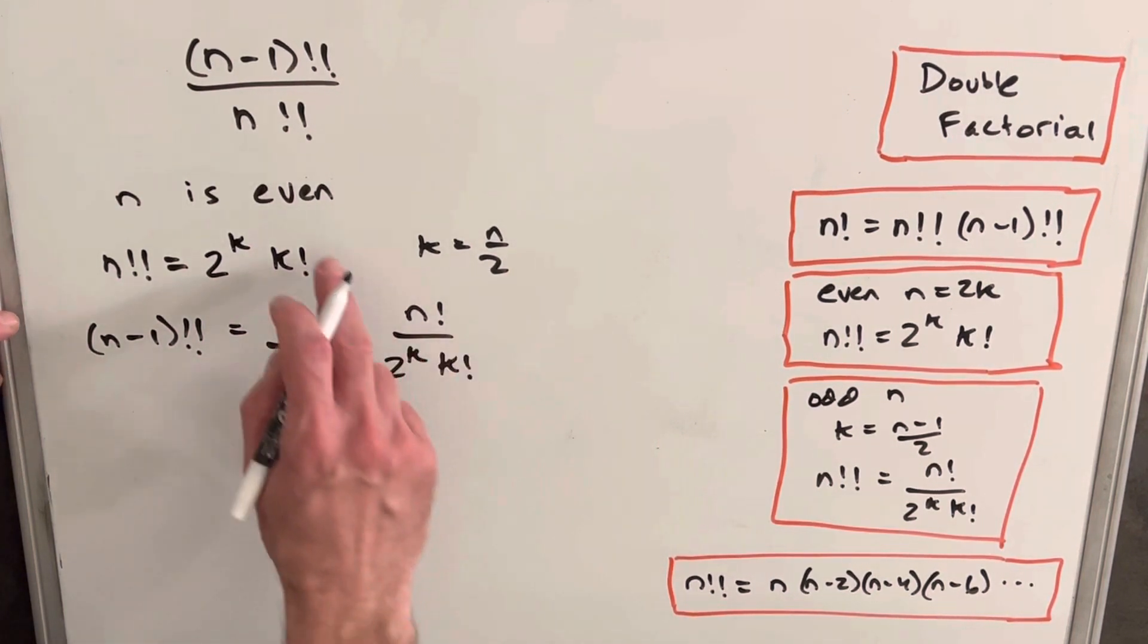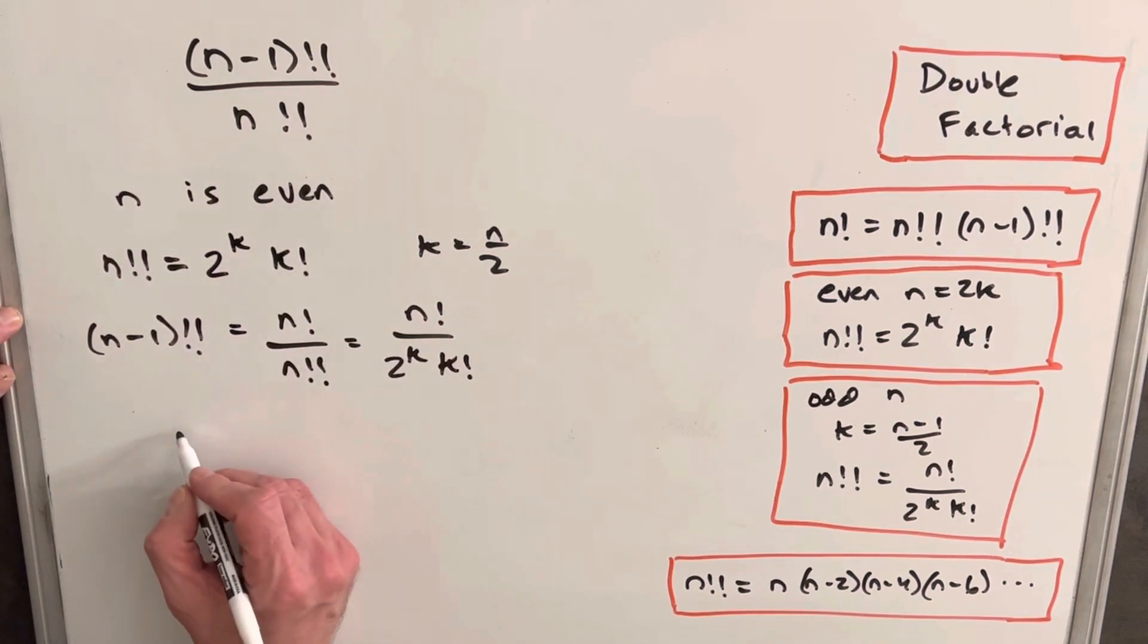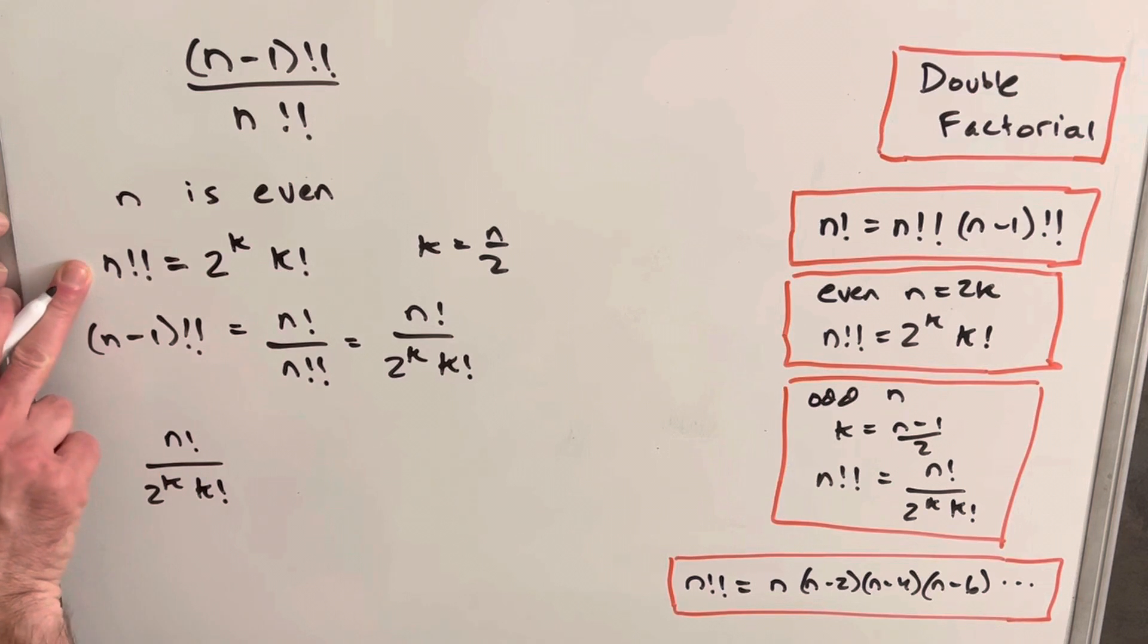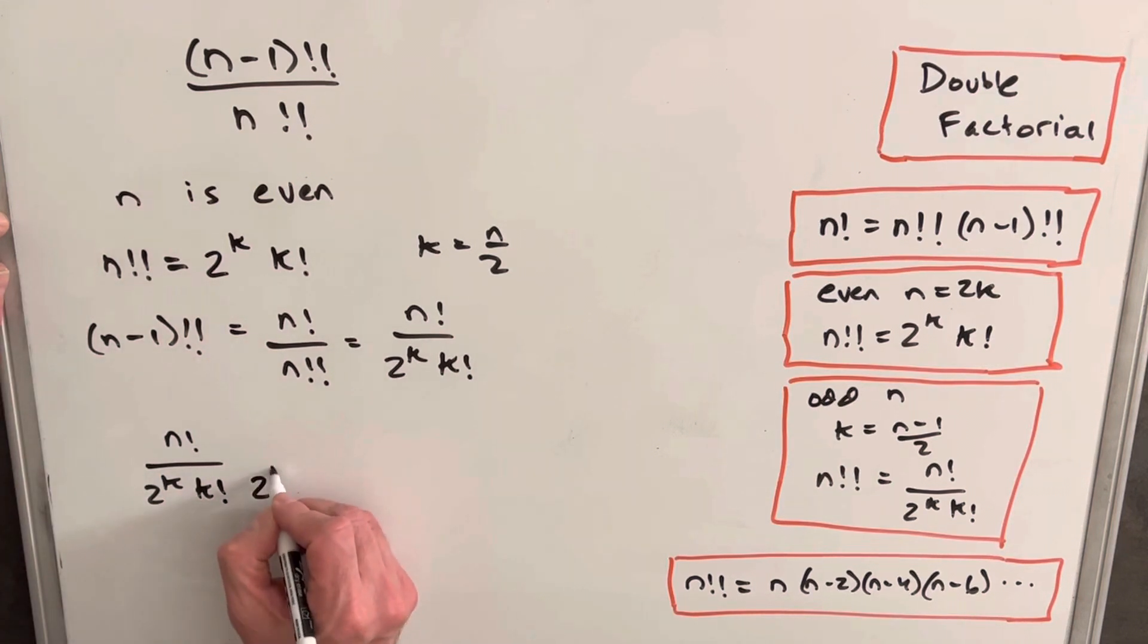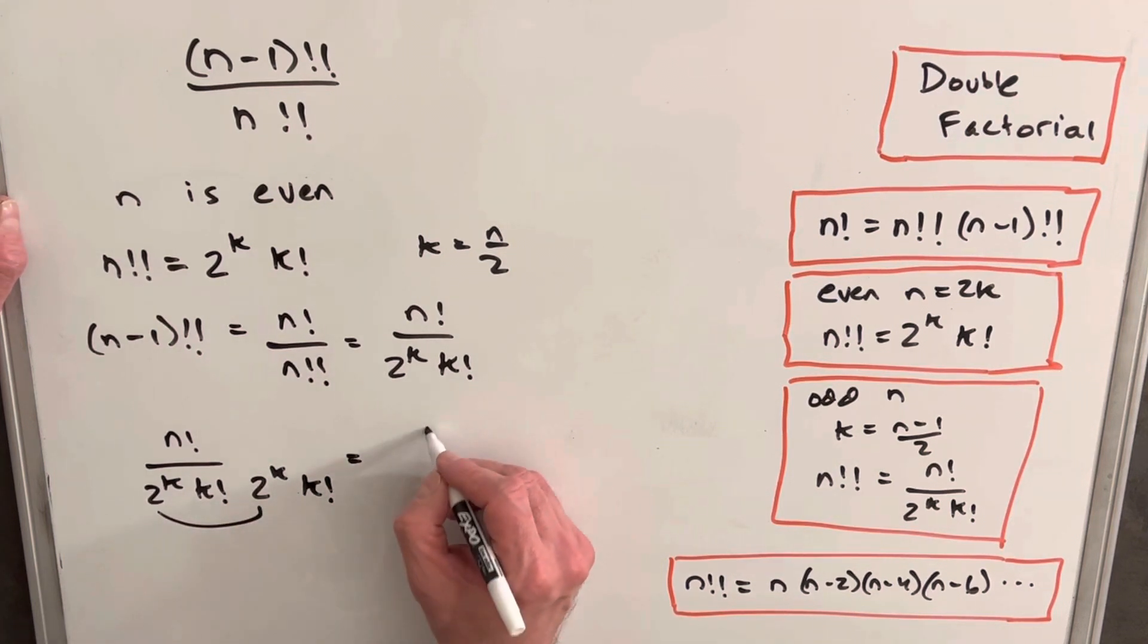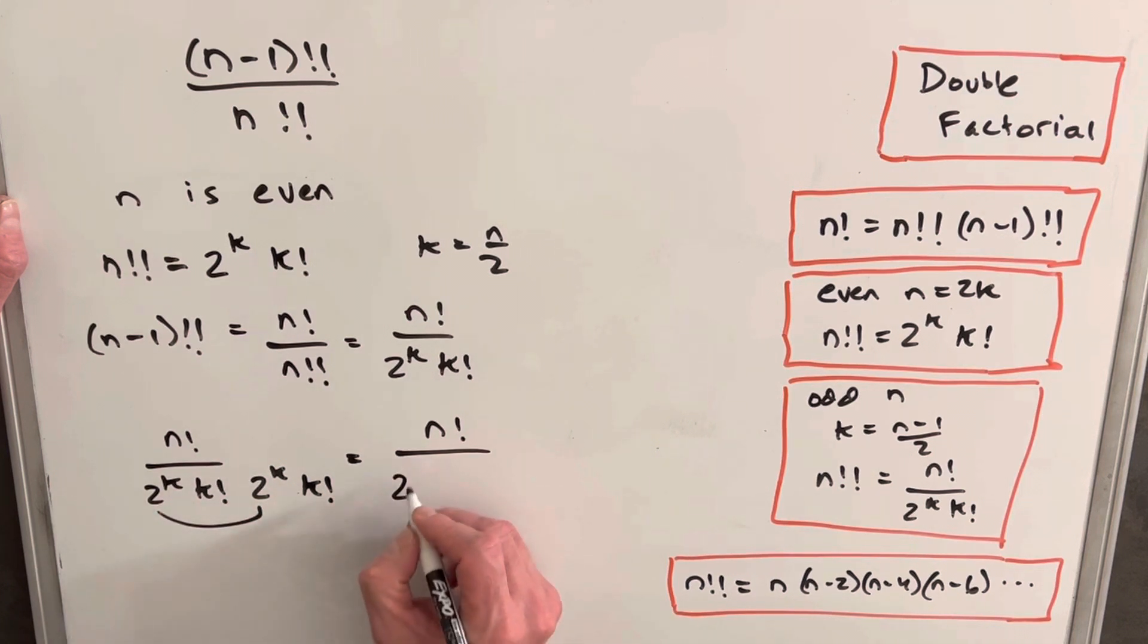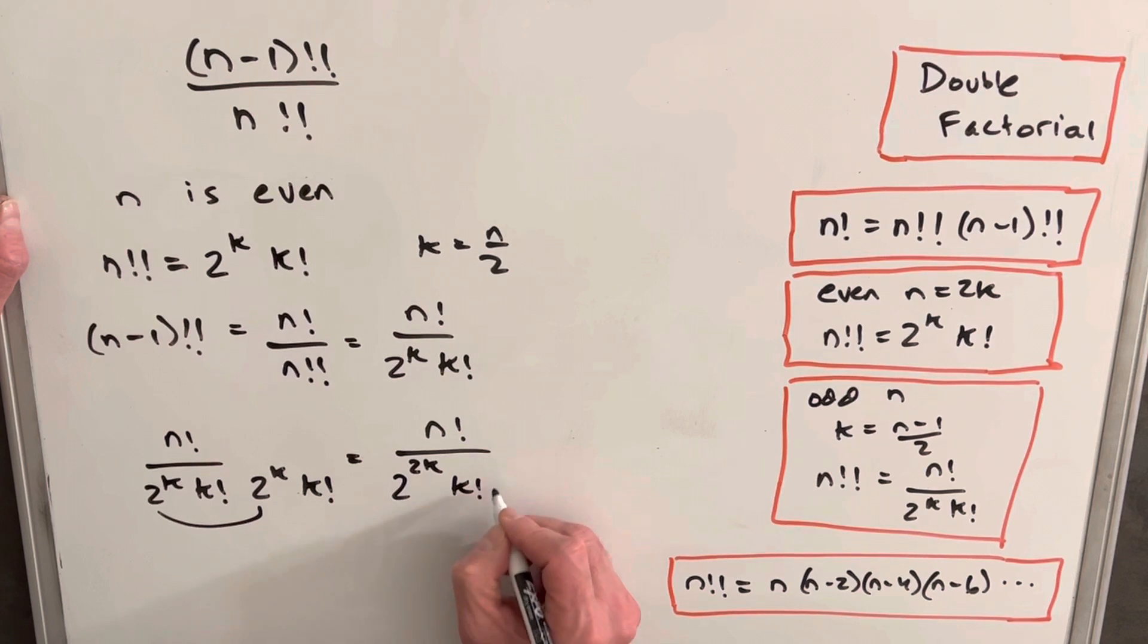So all we need to do now is divide these two to get our expression up here. So we're going to have n factorial. So dividing these two, we're going to have n factorial over 2k k factorial. And then dividing the n double factorial here, we just get another 2k k factorial. Then let's just rearrange this so we're multiplying. We rearrange the order. So this is going to be 2k times 2k, but that's going to be 2 to the 2k k factorial k factorial.